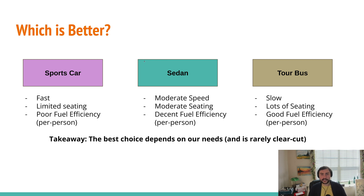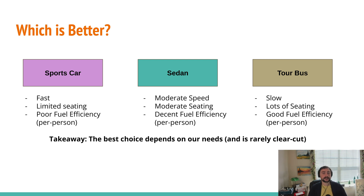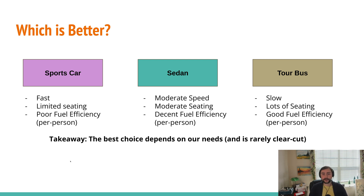What we consider the best really depends on what we're trying to do. Things get even more confusing because inside each of these categories there are plenty of options — a number of different sedans, a number of different sports cars, each with slightly different options. Some might be faster, some might be slightly more fuel efficient. So this process of deciding what's the best is rather complicated. The core takeaway is the best choice depends on our needs, and the answer is rarely clear-cut.